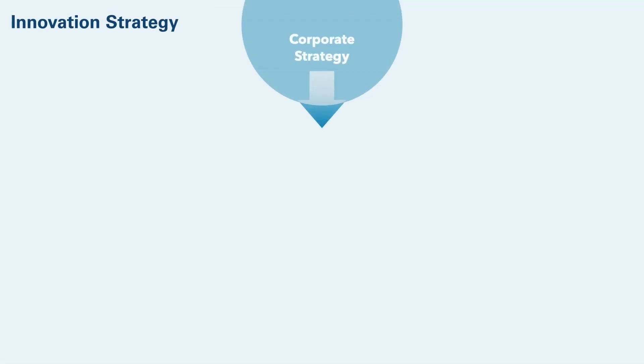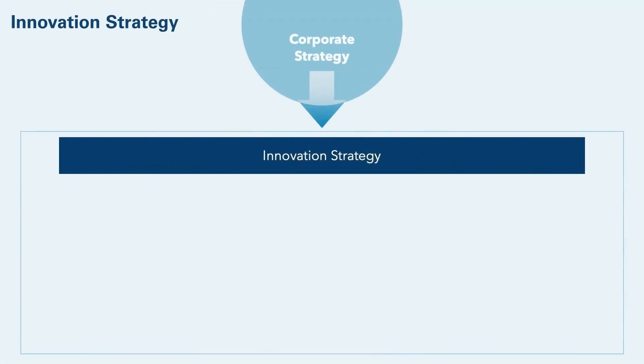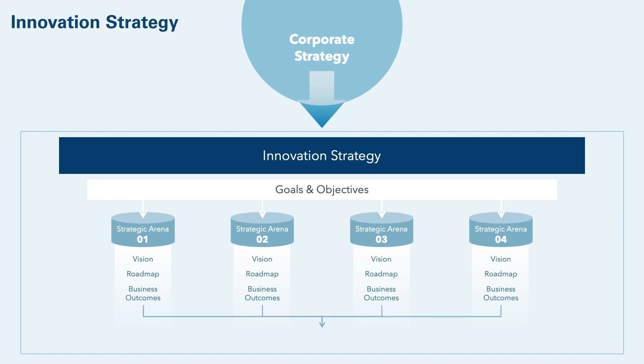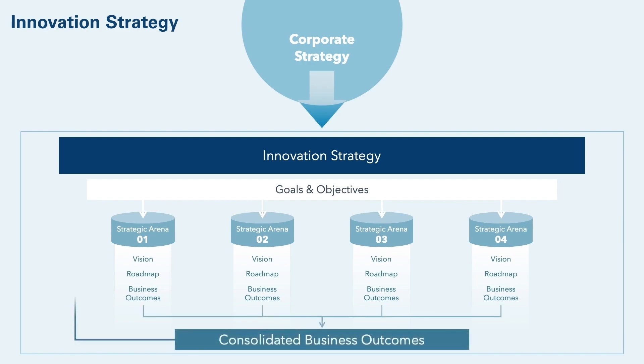The corporate strategy defines the organization's growth goals and objectives. An innovation strategy can be summarized on one page and includes: the goals and objectives; a few strategic arenas, no more than four to seven, each with its own defined vision and roadmap; and an attack plan per strategic arena comprised of a long-term vision, a three-to-five-year roadmap, and business outcomes based on the project portfolio. Ultimately, all the strategic arena business outcomes are summed up and compared to the objectives to ensure that the strategy supports it.